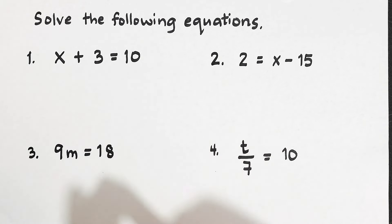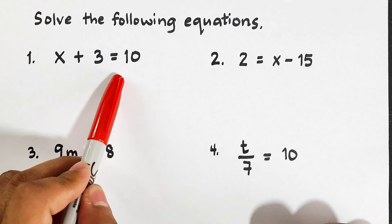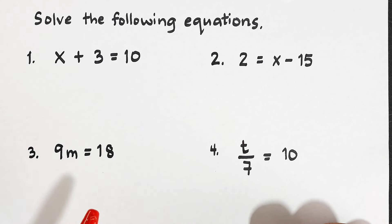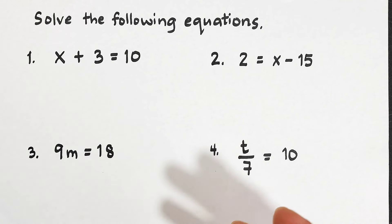As you can see, what we have here are four equations which can be solved using one-step equations. We will just use the different operations — addition, subtraction, multiplication, or division — to undo the operation and finally solve for the missing variable.